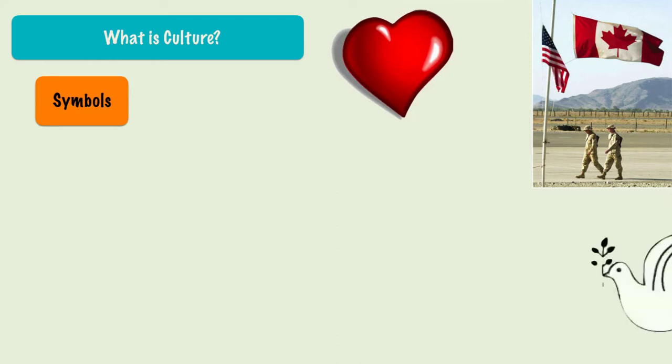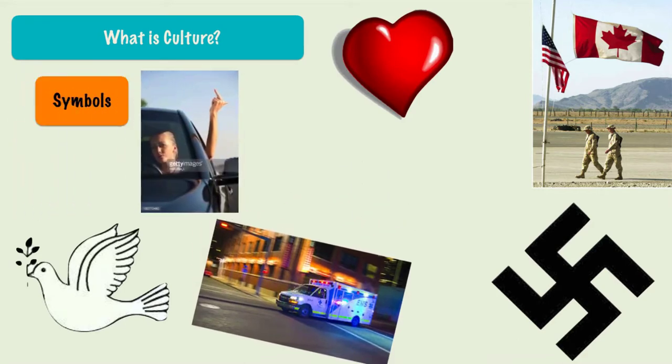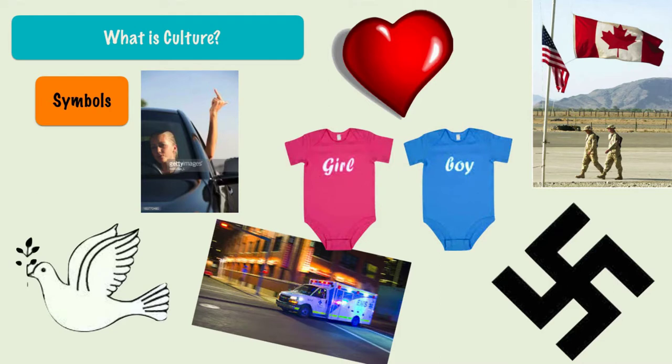For example, we see a heart and think love; a dove and think peace; a swastika and think hate; an emergency siren for an emergency; the raised middle finger for anger and hostility; and the colors blue and pink often mean boy and girl. Some of these may only apply in our culture and not in another — one symbol can be interpreted differently by various cultures. Media also has an influence: commercials for beer, clothing, cosmetics, and medications depict who their market is and what they want considered desirable. When you watch commercials and ads, consider who they're speaking to and what they're communicating as valuable.